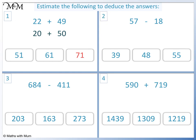Question 2. 57 rounds to 60 and 18 rounds to 20. 60 take away 20 equals 40. The closest answer to 40 is 39.